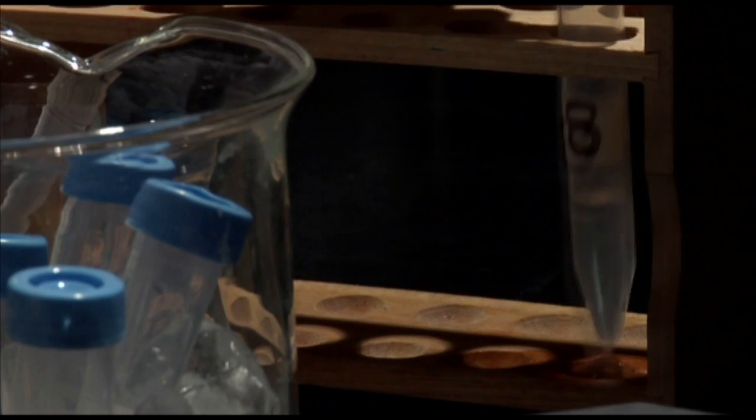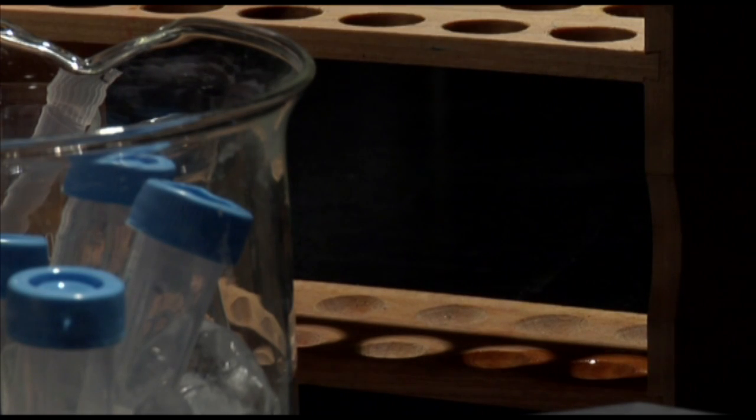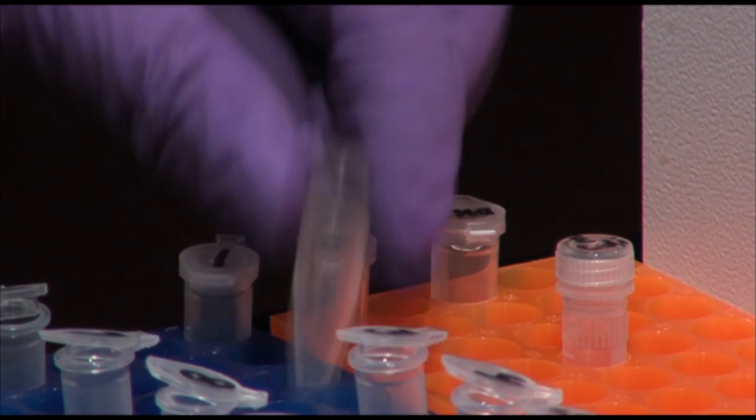Now one of the tubes contains the ECO-R1 enzyme. To find out which one, we'll add the contents of each tube to a sample of DNA and see which one cuts it.